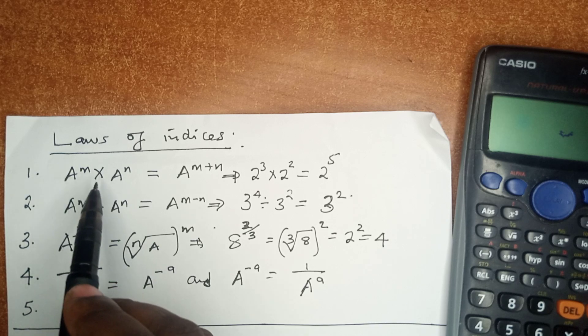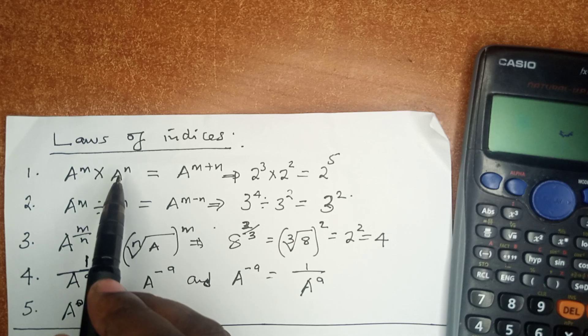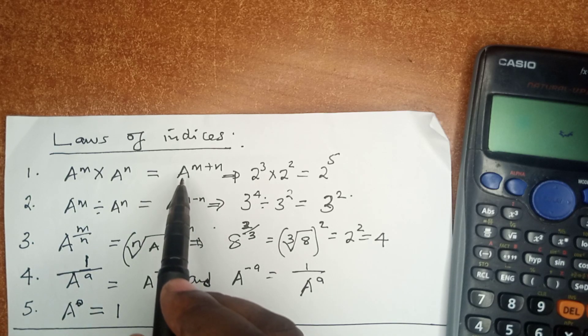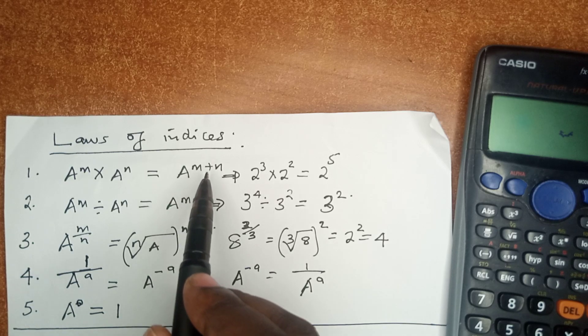If a number a is raised to power m, and it is multiplied to another number a which is raised to power n, then this equals the same base a raised to power m plus n, meaning we add the indices.